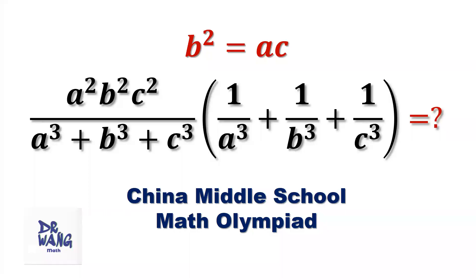Hello everyone, I'm Dr. N. Here I ask the question: b squared equals a times c. What is the value of a squared times b squared times c squared, divided by a to the power of 3 plus b to the power of 3 plus c to the power of 3, then times 1 over a to the power of 3 plus 1 over b to the power of 3 plus 1 over c to the power of 3?